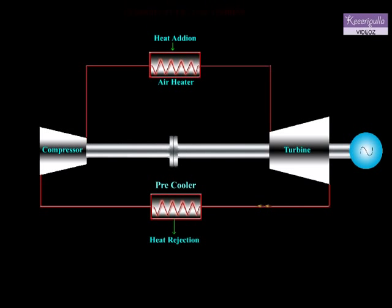The pre-heated air passes through the air heater. In the air heater, heat is supplied to the air by burning the fuel externally. The hot air is then expanded in the turbine.